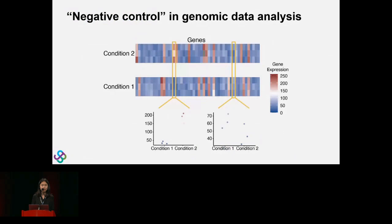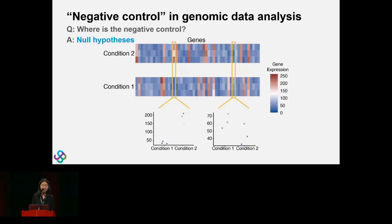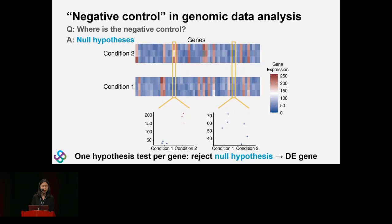But in genomic data analysis, what is the negative control is not often obvious or concrete. This cartoon shows a common RNA-seq differential expression analysis in which we have three replicates under each condition, and every column represents a gene. When we do differential expression analysis, the goal is to compare every gene's expression values under the two conditions. We do one hypothesis test per gene, and if we reject the null hypothesis that the gene has no expression difference, we call it a DE gene.